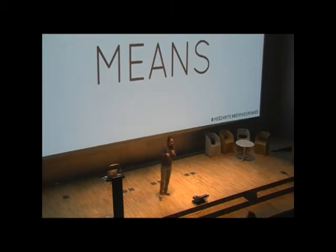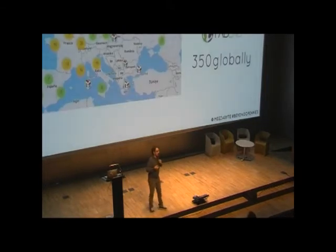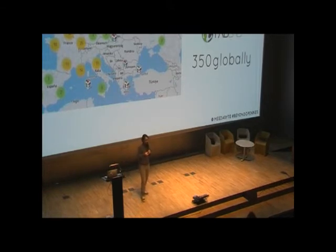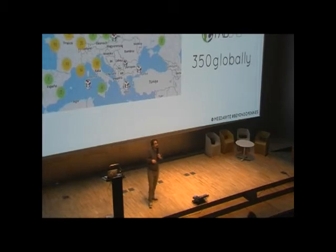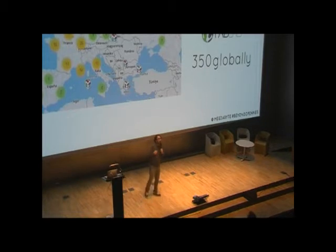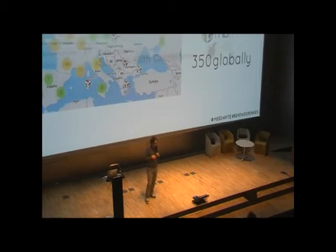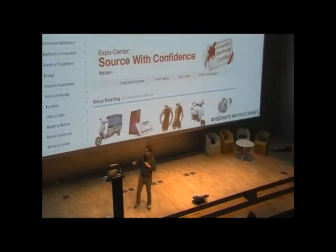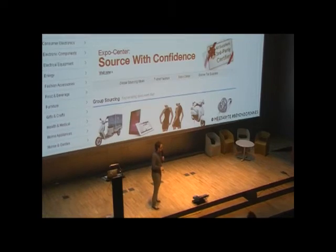Access to the means of production is also changing. If you look at the numbers with fab labs, they're pretty impressive — we now have more than 350 fab labs globally and they're growing according to a law familiar to some of you: Moore's Law. So it's really growing exponentially. Even on the edges of access to means of production, the difference is shrinking.